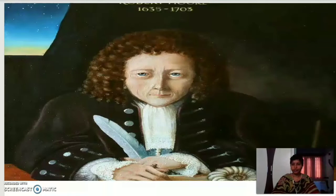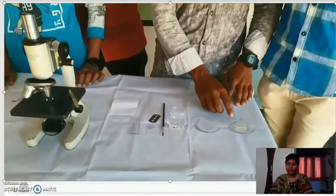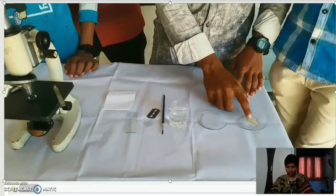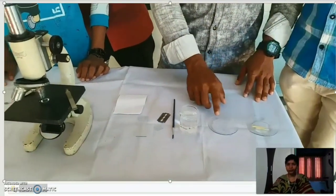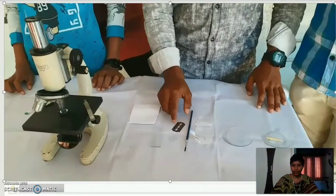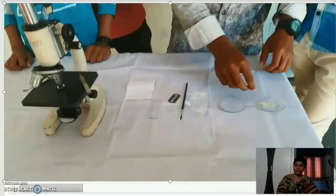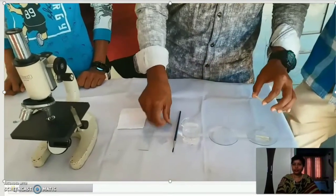Can we observe the cells that Robert Hooke observed? It is difficult because we can't fetch the bark of an oak tree, but we can observe a similar type of cells using this lab activity. The materials required are: soaked matchsticks (soaked for four to five hours), water in a watch glass, beaker, brush, blade, cover slip, slide, white paper, and microscope. This experiment is done by my students in my school.